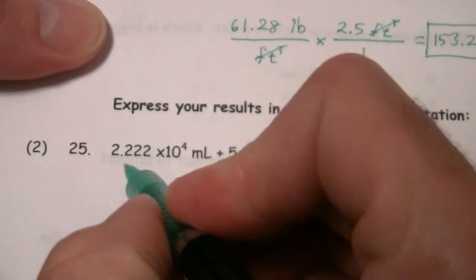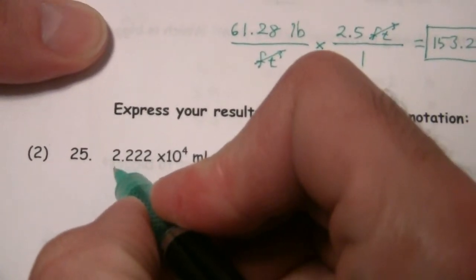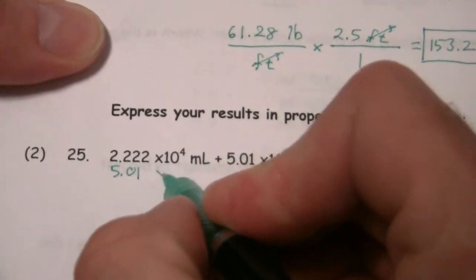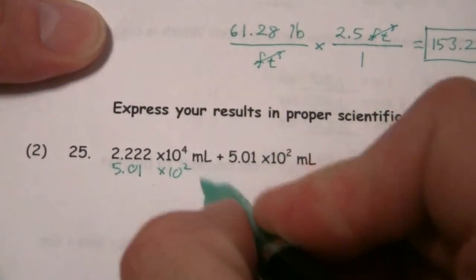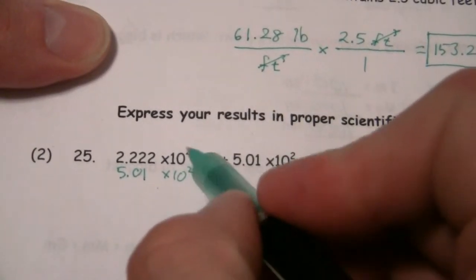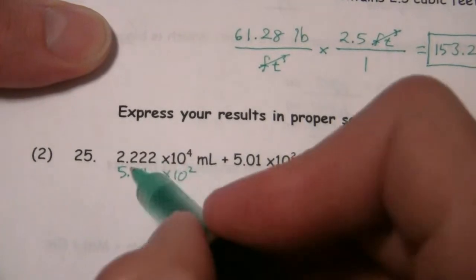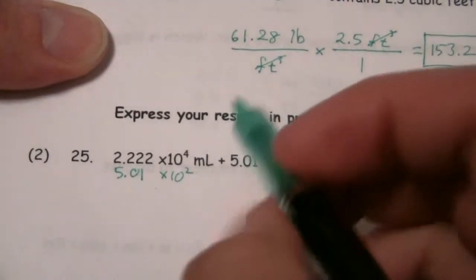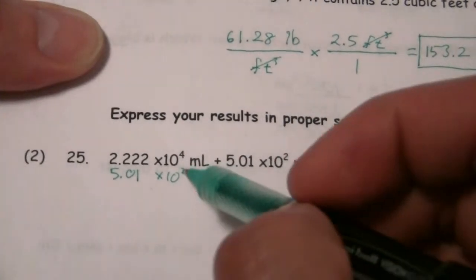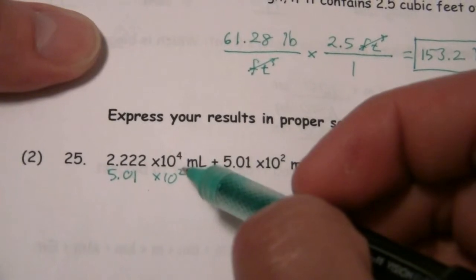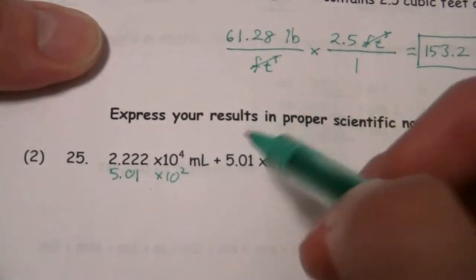And when we add these, if I just wrote it like this, 5.01 times 10 to the 2, these exponents are not the same. And so my decimal really isn't aligned there. So what do I need to do? Let's make them both the same exponent. And we'll convert the smaller to the larger.